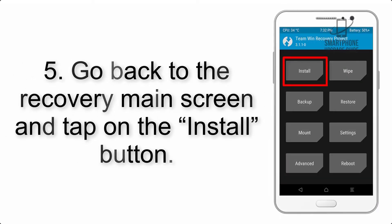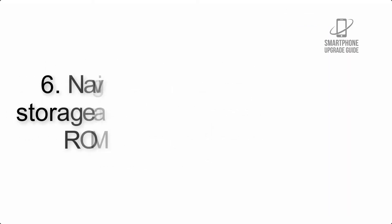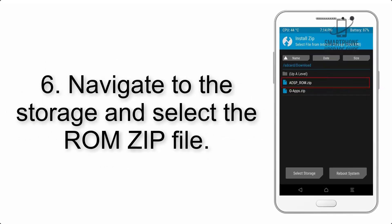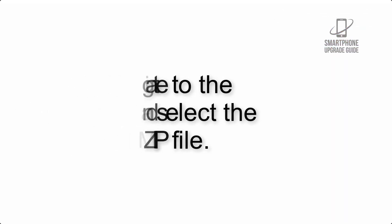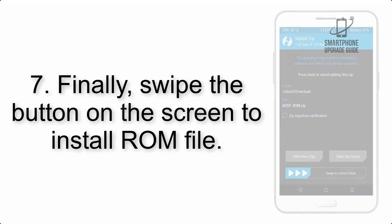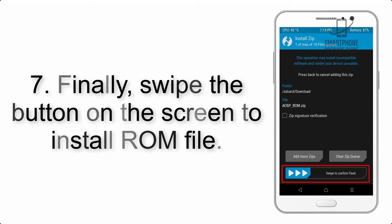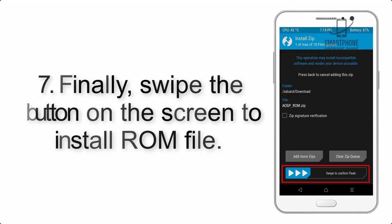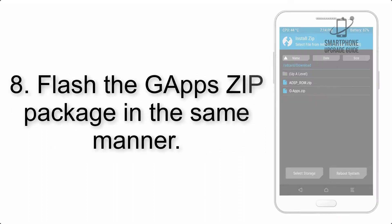Step 5: Go back to the recovery main screen and tap on the Install button. Step 6: Navigate to the storage and select the ROM zip file. Step 7: Finally, swipe the button on the screen to install the ROM file.